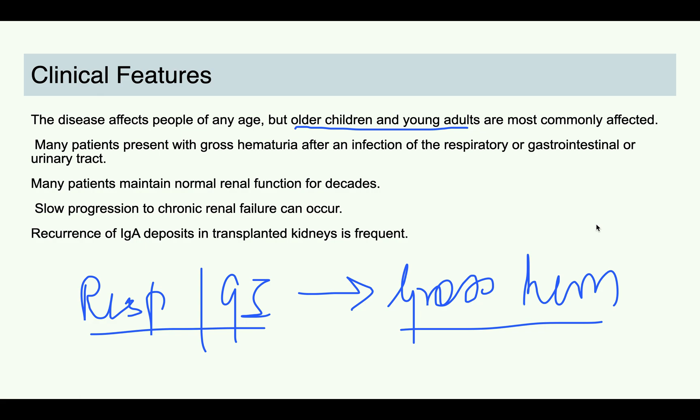This condition comes once, then it comes again after some time — after some years there is another respiratory infection and the patient again presents with gross hematuria. So this is recurrent. These patients can maintain normal renal function for decades; however, they can progress into chronic renal failure. These patients can then go for transplantation, but there is again recurrence of IgA deposits in around 30% of patients.